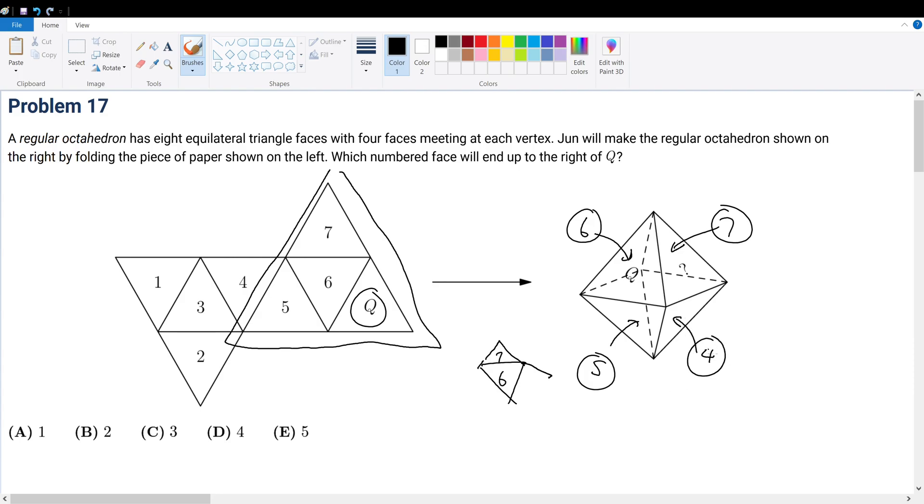And 3 is at a center face, so the center face would be right here. Right here, right? So then... Oh no, no, no, sorry. It would be right here, because 3 would have to be on top of 7. So that's 3.